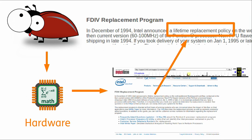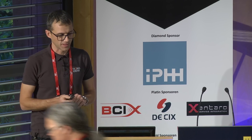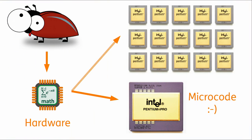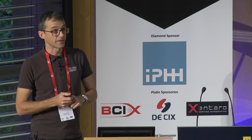Do any of you know the FDIV bug? In 1994, Intel had a bug in their hardware. The solution in those days was a lifetime replacement policy — if you had the bug and wanted it fixed, you could get a new spare processor. For some kinds of bugs that is still the case. But with the Intel Pentium Pro processor, they had a real nice idea: they could provide software updates for the hardware, so they began to provide microcodes for the CPU.